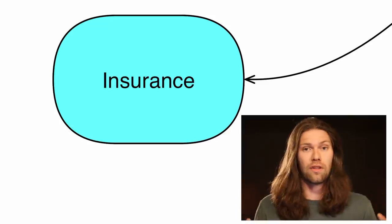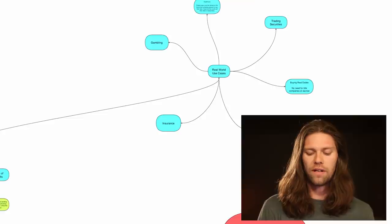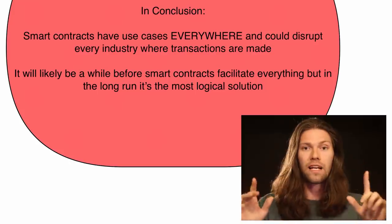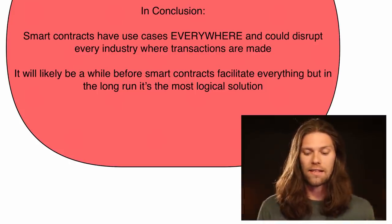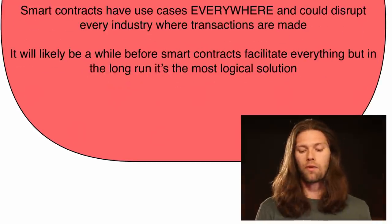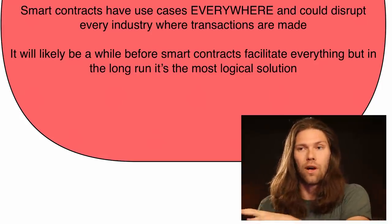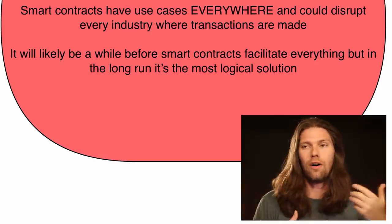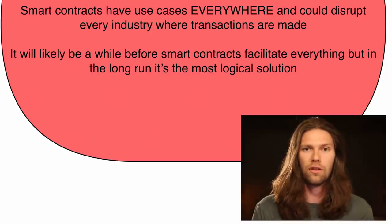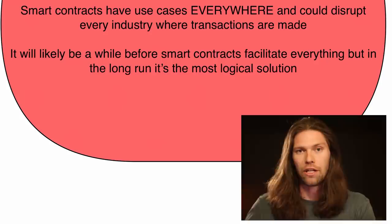Smart contracts have use cases literally everywhere — you can probably think of your own example. It will likely be a while before smart contracts facilitate everything in the business world, but chances are by the time they're everywhere, we're just going to call them contracts. In the long run it's the most logical solution — over time, middlemen become smaller and smaller and eventually go away.